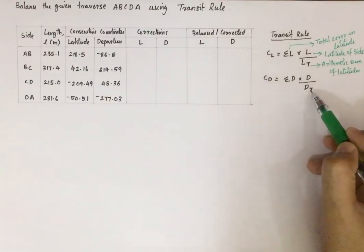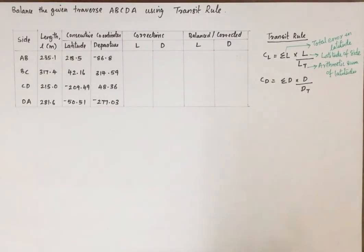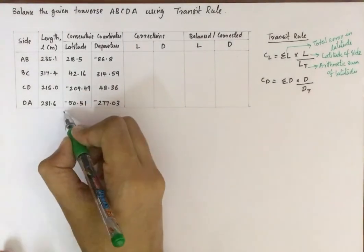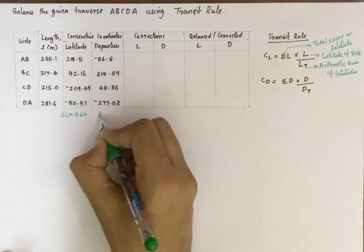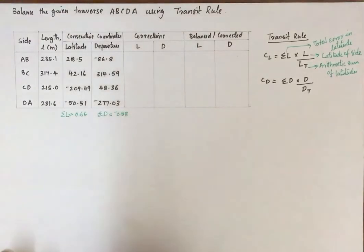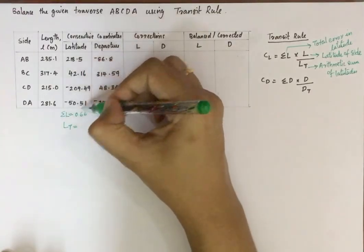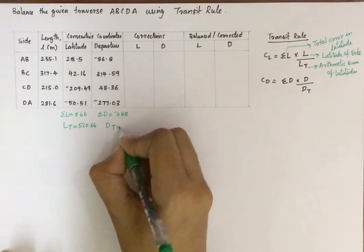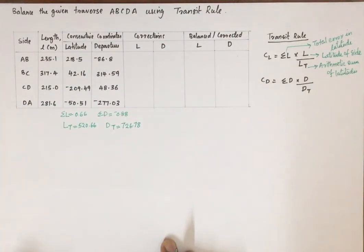Before starting this problem, we find σL and σD. σL is the algebraic sum of the latitudes, which gives 0.66. σD is minus 0.88. The arithmetic sum of latitudes LT is 520.66, and the arithmetic sum of departures DT is 726.78. These are the values required to solve this problem.